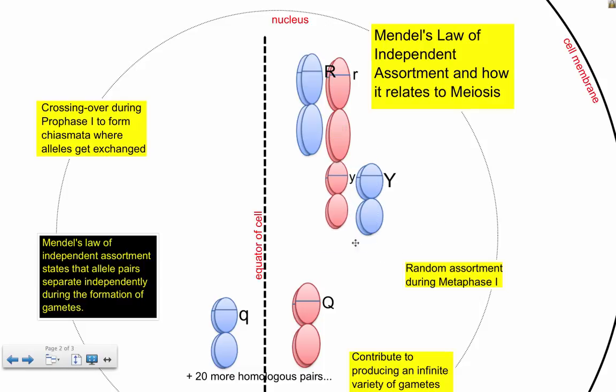are going to find each other because they're homologous and when they find each other they're going to do some crossing over. I'm not going to illustrate that but they're going to join up and they might exchange alleles with each other.